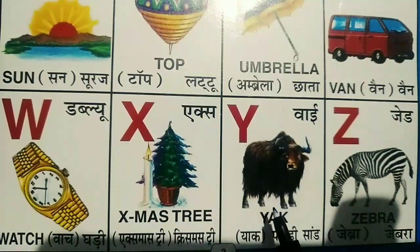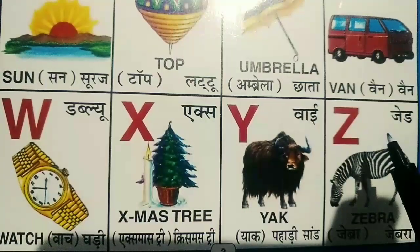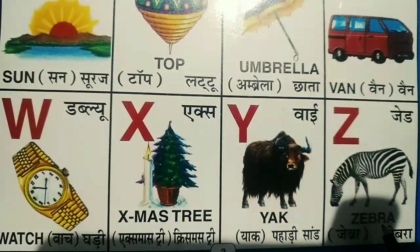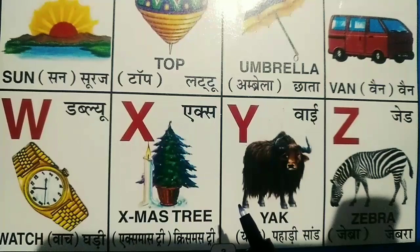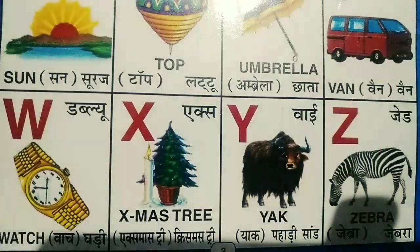Y for yak. Yak means pahari sher. Z for zebra. Zebra means zebra. I hope you like this video, so like this video, share this video, and subscribe to our channel.